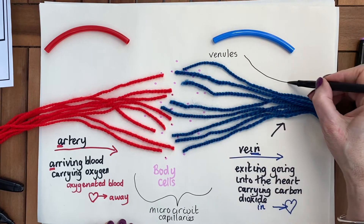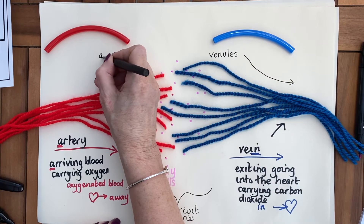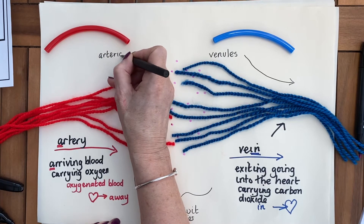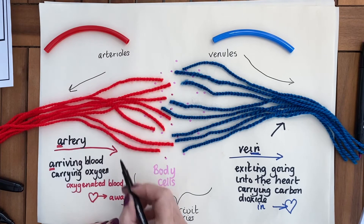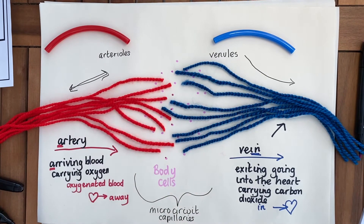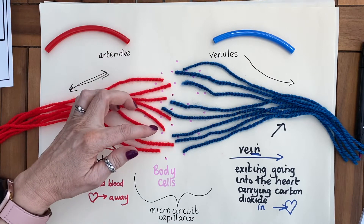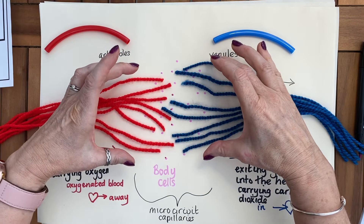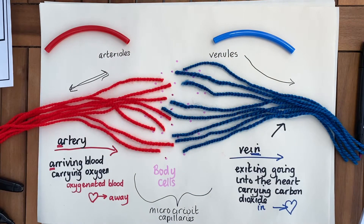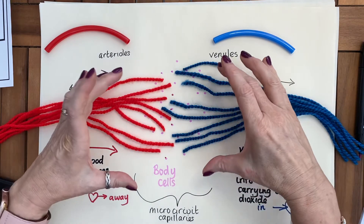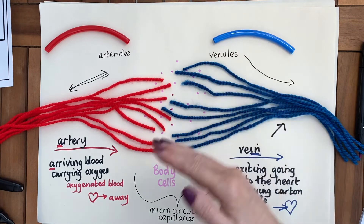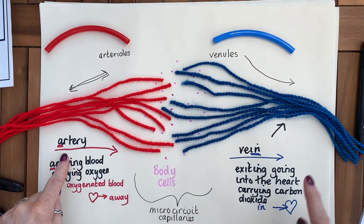The venules run into veins, and the arterioles come from the artery. Your artery brings oxygen through the arterioles to every cell. Arterioles carry red oxygenated blood; in comparison, venules take the blood away — it needs to go back to the heart to collect oxygen, represented in blue. These capillaries — arterioles and venules — form a microcircuit coming from the arteries and veins.